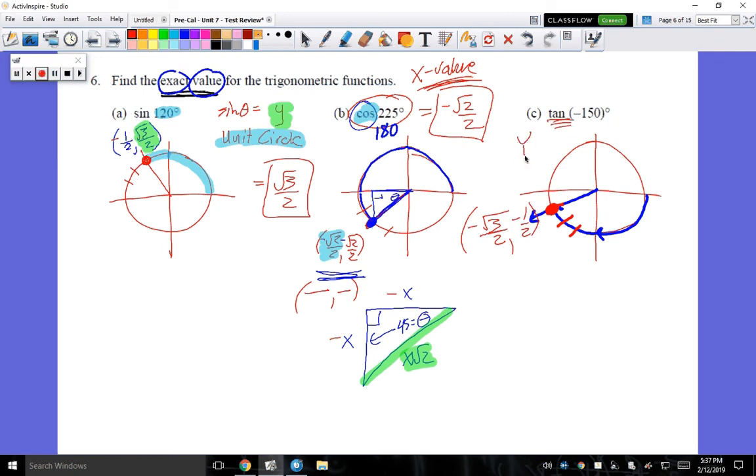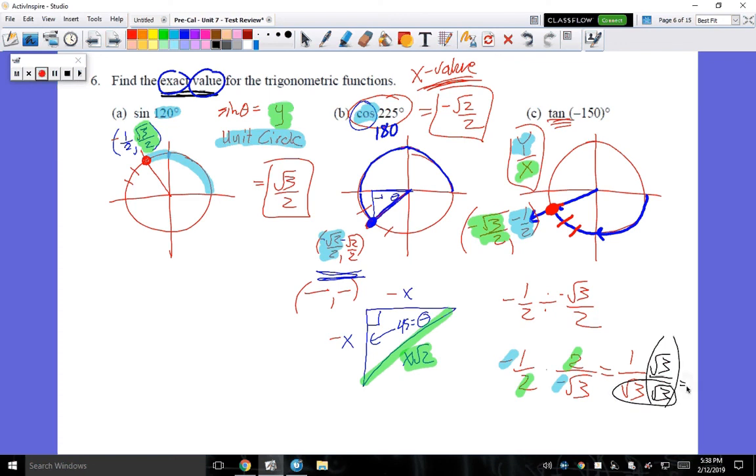And tangent is looking for the Y over the X. Otherwise, the Y value over the X value. Now, some of you might be cringing if you make this into a fraction. But if I wrote it as negative 1 half divided by negative root 3 over 2, fifth grade tells me I can keep, change, flip this. And then I can cancel out the 2's because they cancel out to a form of 1. I can cancel out the 2 negatives which become positive. And I'm left with 1 over root 3. And yes, if I have a square root in the denominator, I need to rationalize it. Where this would become 3, and the top would become root 3. So my answer here would be root 3 over 3.